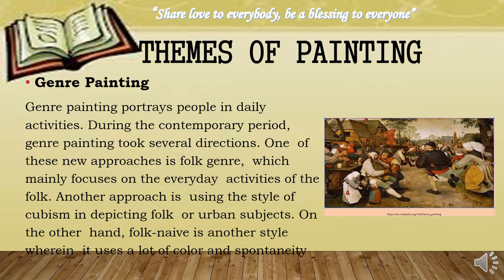Next are the different themes of painting. First is genre painting. Genre painting portrays people in daily activities. During the contemporary period, genre painting took several directions. One of these new approaches is folk genre, which mainly focuses on the everyday activities of the folk. Another approach is using the style of cubism in depicting folk or urban subjects. Folk art is another style that uses a lot of color and spontaneity.